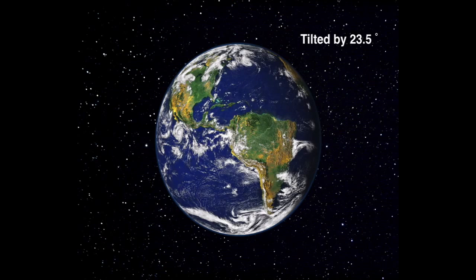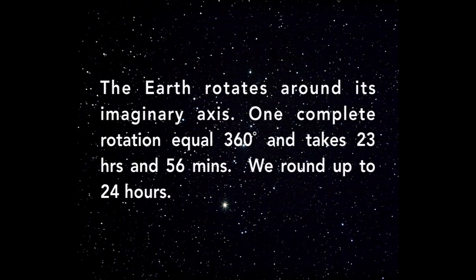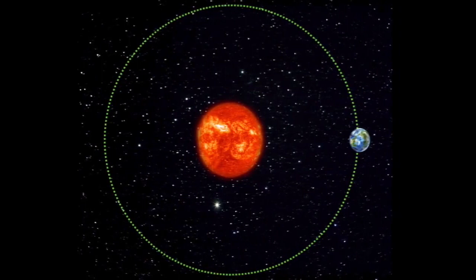Earth has what we call an imaginary axis. That axis runs from the North Pole to the South Pole. The Earth rotates around its imaginary axis, and one complete rotation equals 360 degrees. It takes 23 hours and 56 minutes — we round that up to 24 hours — but there's a good reason why the Earth's rotation is 23 hours and 56 minutes.